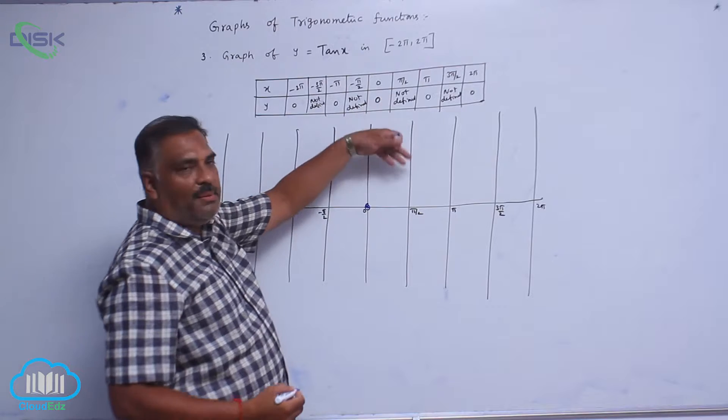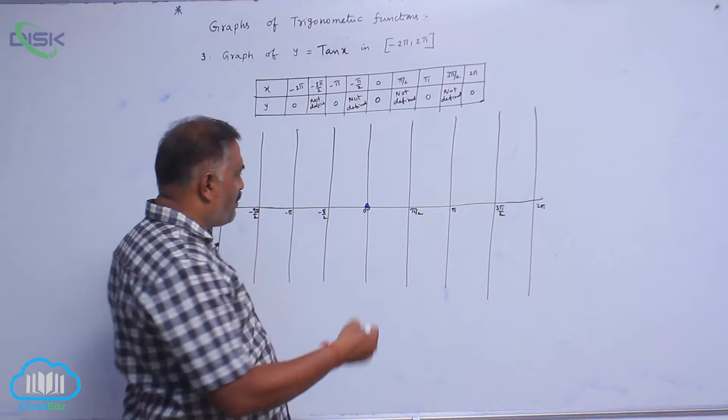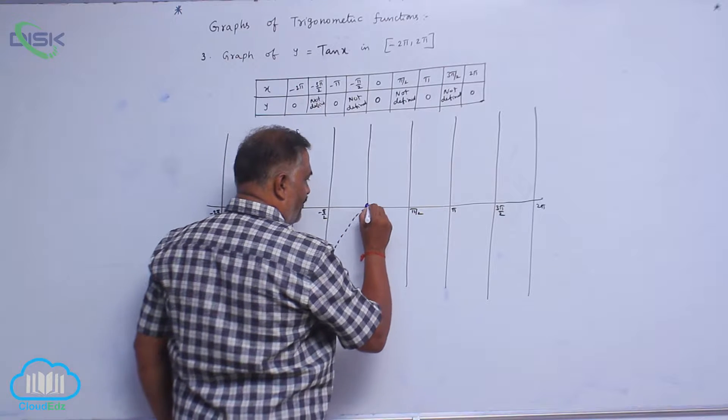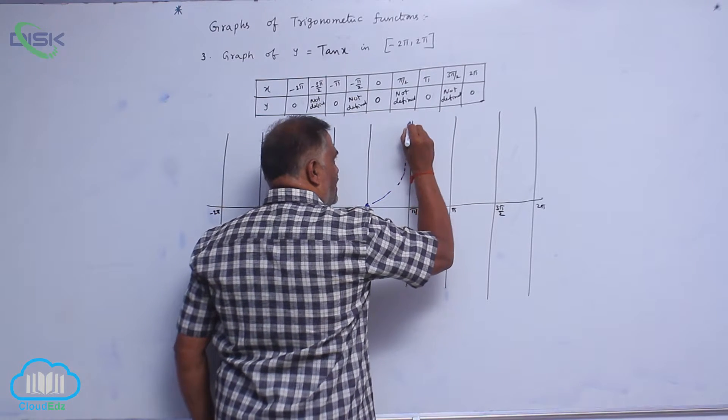So, tan 90 means first quadrant always upward. That means the graph of tan x will be like this, touching the curve at infinity.